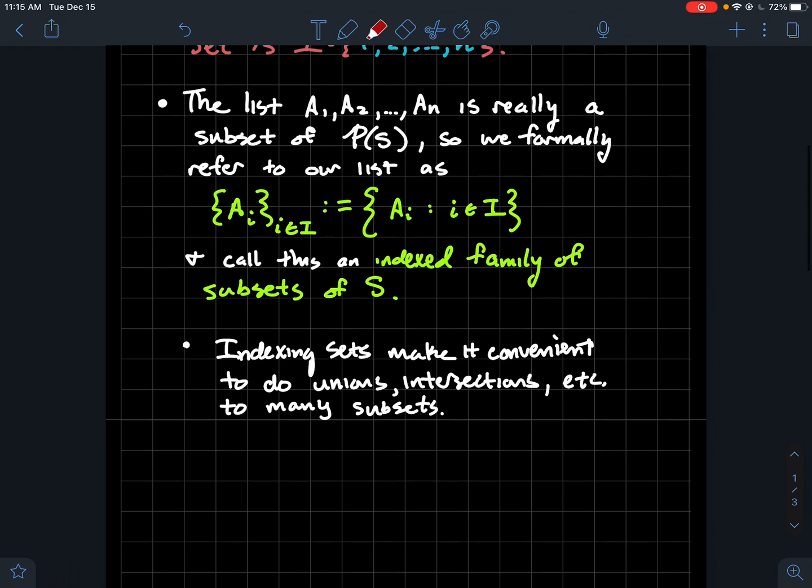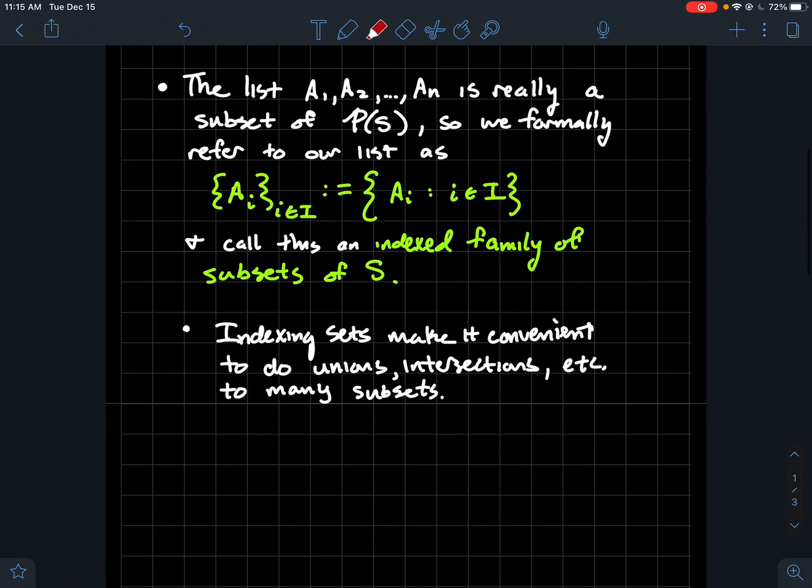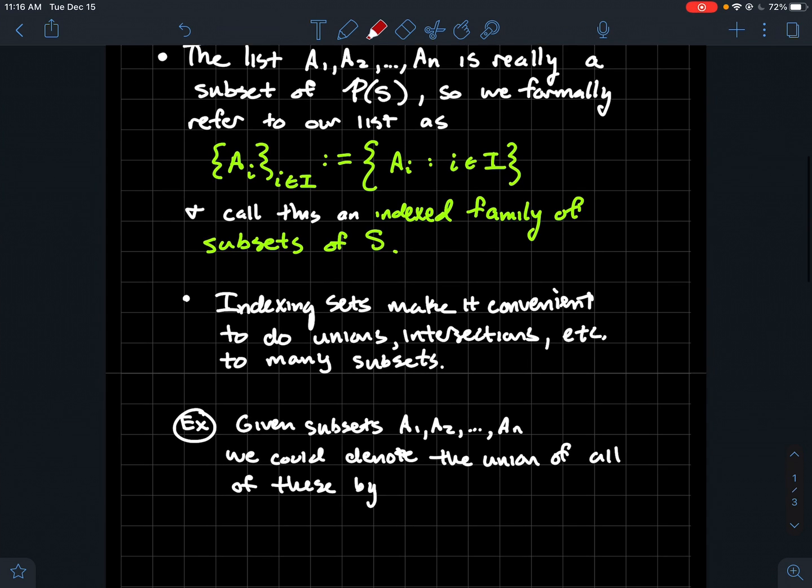So what do these do for us? Why are these useful? Indexing sets make it convenient to do unions and intersections and operations with sets, kind of like sigma notation made it convenient to add a whole bunch of numbers together, or like the giant pi symbol makes it convenient to multiply a whole bunch of numbers together.